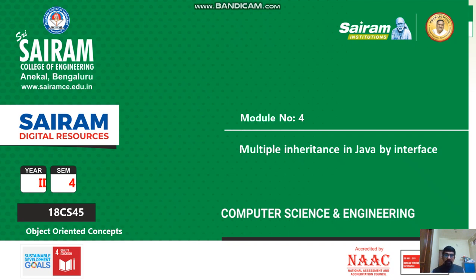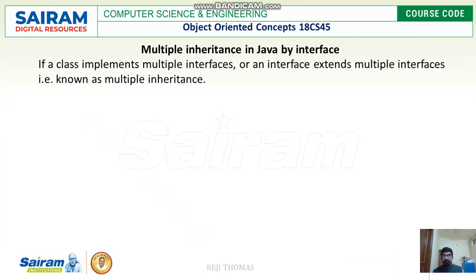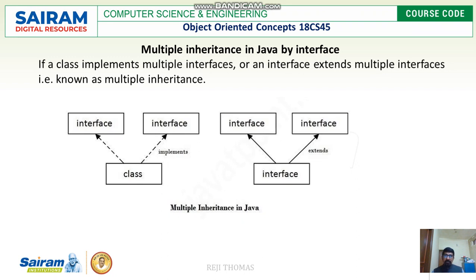Welcome back. In this video we are going to see how multiple inheritance can be done in Java. We have seen in the previous topic that we cannot have multiple inheritance in Java using a class, but using an interface we can. Inheritance means a class is going to inherit certain properties from its superclass or parent class, but normally a class cannot inherit properties from multiple classes.